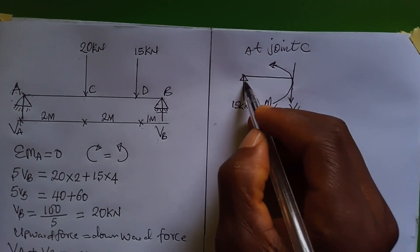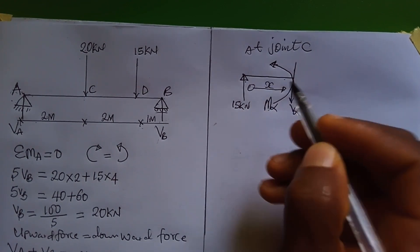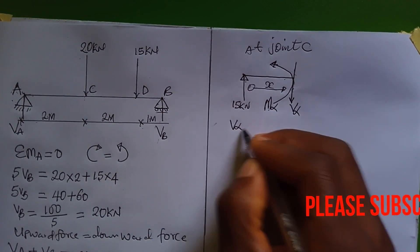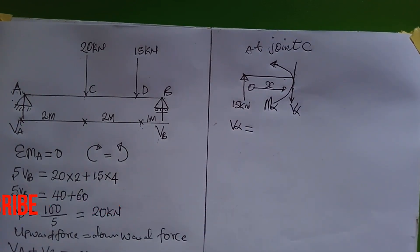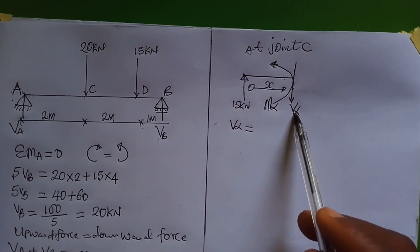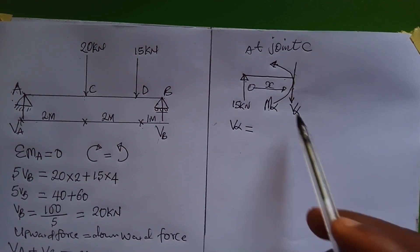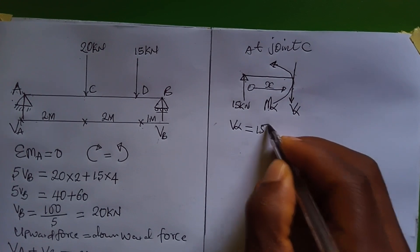Under VA we got 15 kilonewtons. The distance from here to the cut is unknown, so we represent it with x. V_alpha, the shear force expression, equals the algebraic sum of the vertical forces. 15 kN is going up and V_alpha is going down, so V_alpha equals 15 kilonewtons.